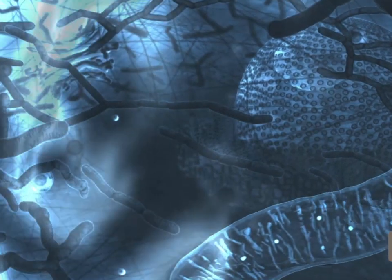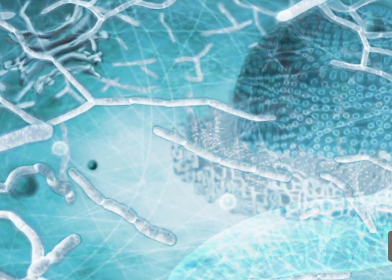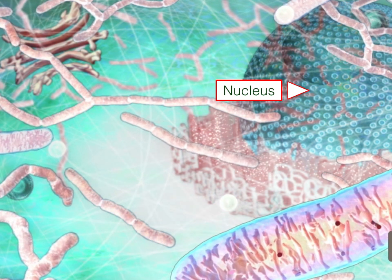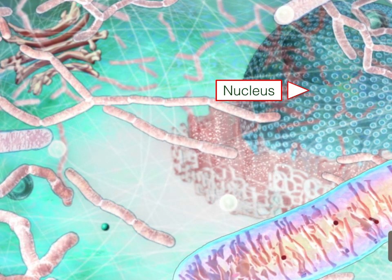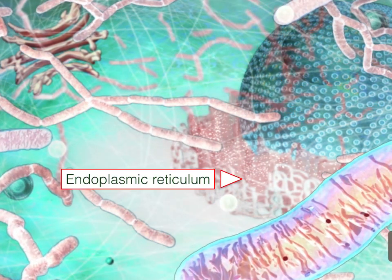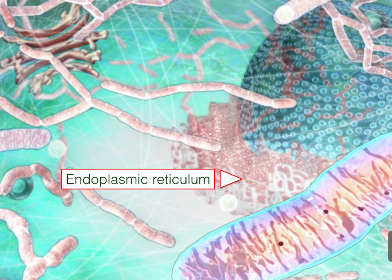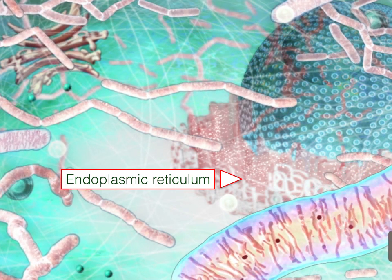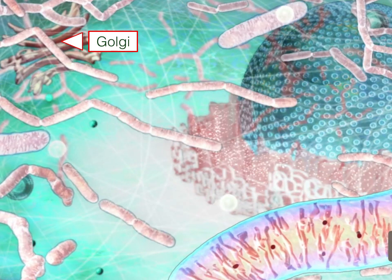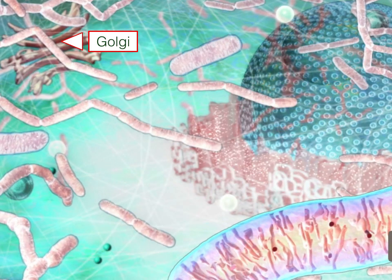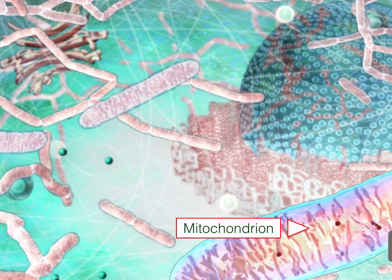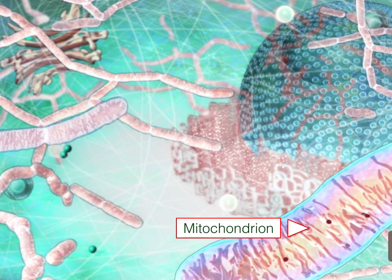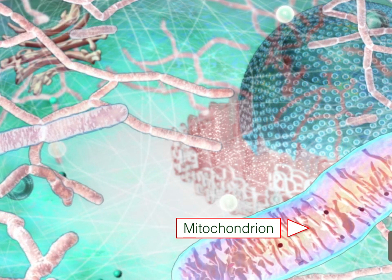The cell is divided into different compartments. Here is the nucleus, where genetic material DNA is stored and processed. Here is the endoplasmic reticulum, where proteins, lipids, and other molecules are made and transported. Here is the Golgi apparatus, the post office of the cell. And down here is the mitochondrion, the powerhouse of the cell, where most of the ATP in the cell is made.